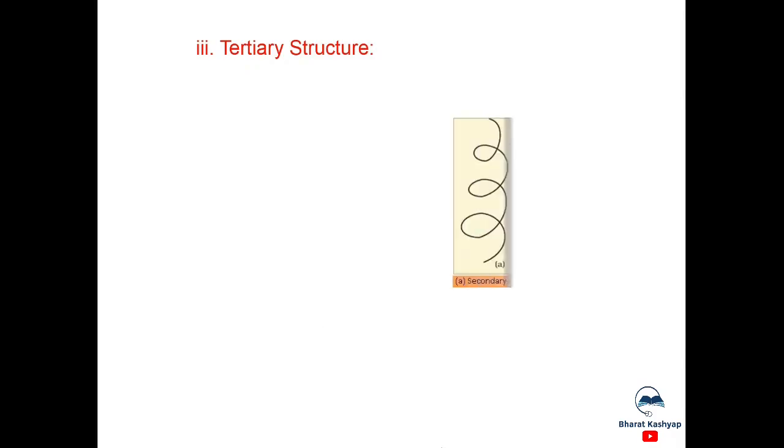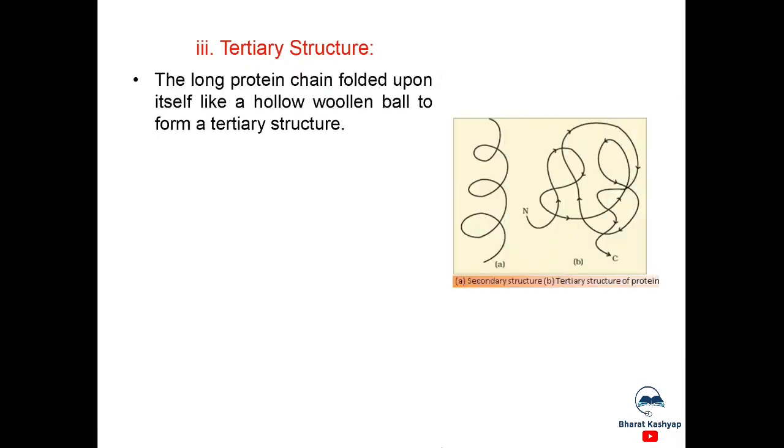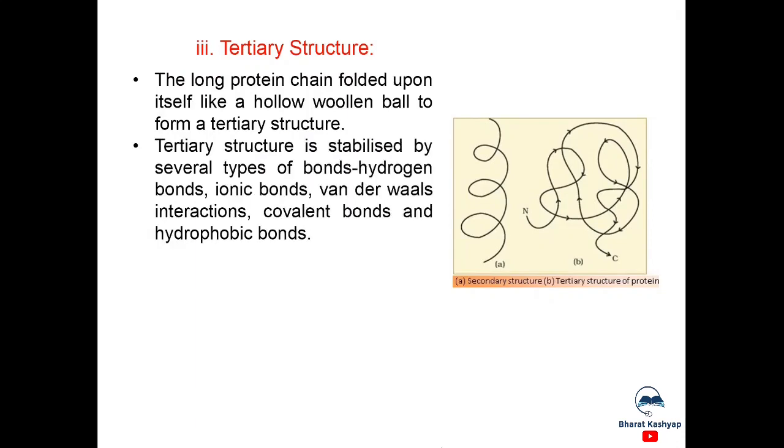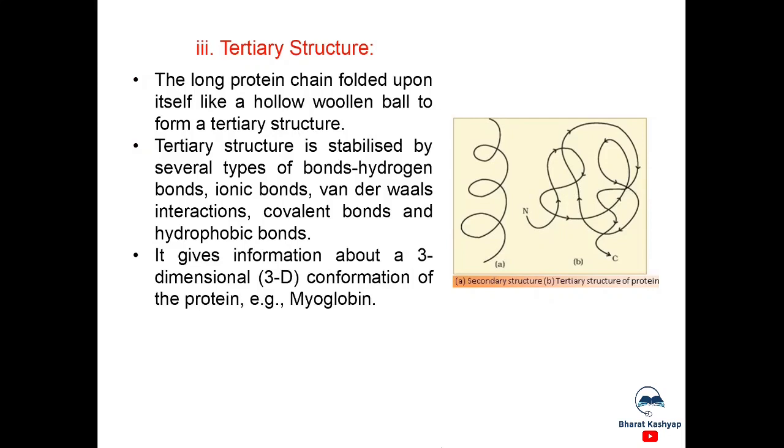Now, tertiary structure of protein. The long protein chain folded upon itself like a hollow woolen ball to form a tertiary structure. Tertiary structure is stabilized by several types of bonds like hydrogen bonds, ionic bonds, van der Waals interactions, covalent bonds, and hydrophobic bonds. It gives information about a three-dimensional conformation of the protein, for example, myoglobin. Tertiary structure is helpful for many biological activities of proteins. So, in the picture, this is the secondary structure and this is further folded structure of tertiary protein.